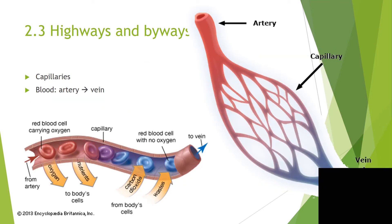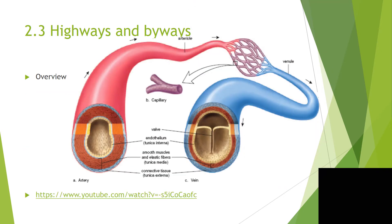Capillaries connect arteries with veins. They are the ones that give oxygen and nutrients to the cells, and they pick up carbon dioxide and other waste substances from your cells. Because their walls are very thin — only one cell layer thick — this transport of oxygen, nutrients, carbon dioxide, and waste to and from the cells is very easy. There is almost no blood pressure here. Make sure you learn the comparison table in your notebook really well.